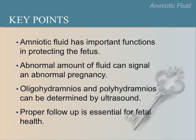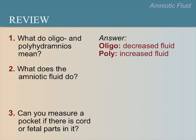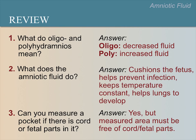Questions for review — please pause the video now to discuss these questions and answers among the group. What do the terms oligo and polyhydramnios mean? Oligohydramnios means decreased fluid, and polyhydramnios means increased fluid. What does amniotic fluid do? It cushions the fetus, allows room for the fetus to grow, helps prevent infection, keeps the temperature constant, and helps the fetal lungs to develop. Can you measure a pocket if there is cord or fetal parts in it? Yes, but the measured area of the pocket must be free of cord or fetal parts.